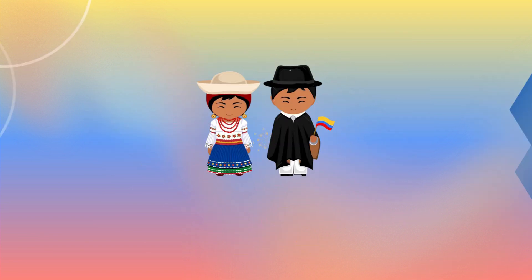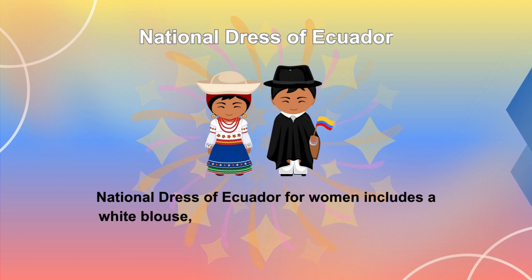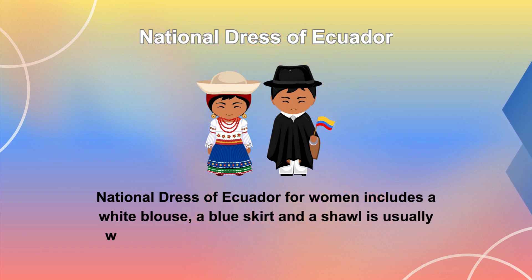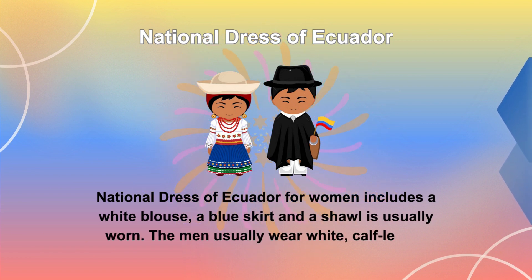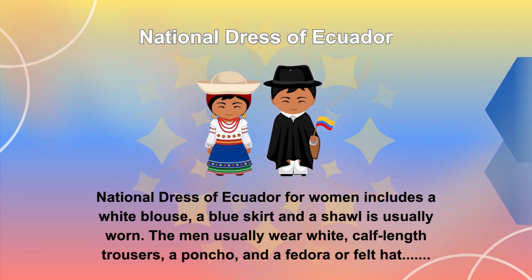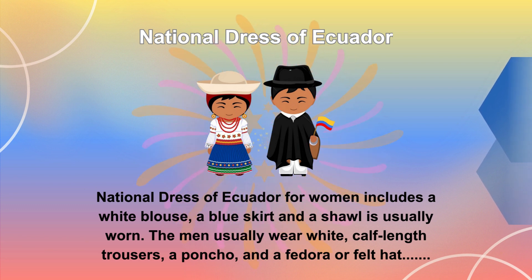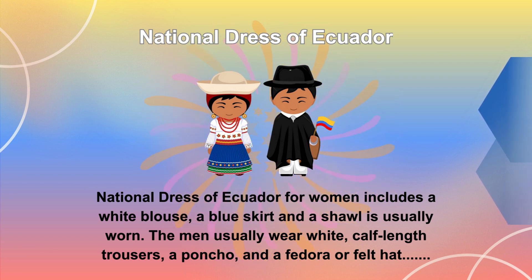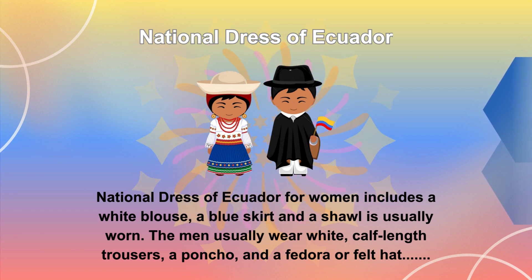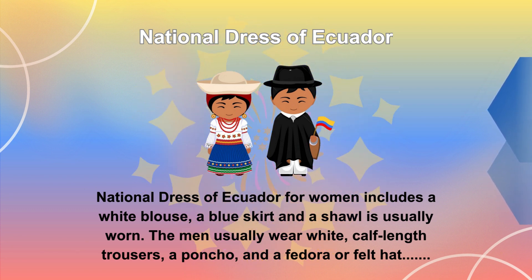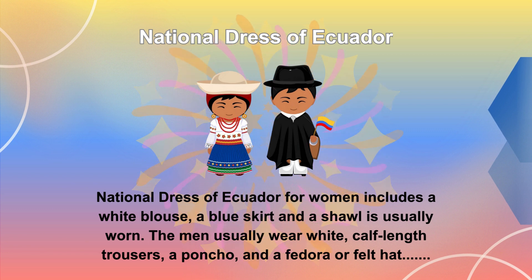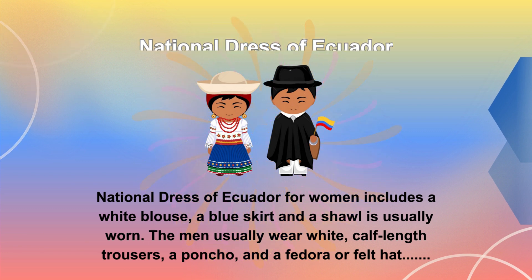The national dress of Ecuador for women includes a white blouse, a blue skirt, and a shawl is usually worn. Men usually wear white calf-length trousers, a poncho, and a fedora or felt hat. They also grow braids to reach their waists, which are considered a crucial part of Ecuadorian identity.